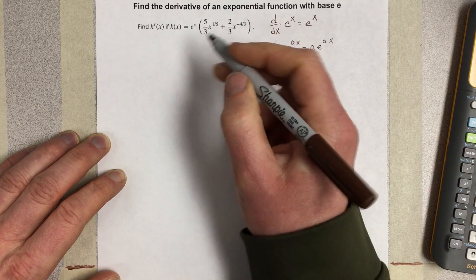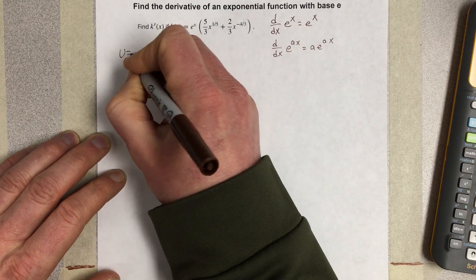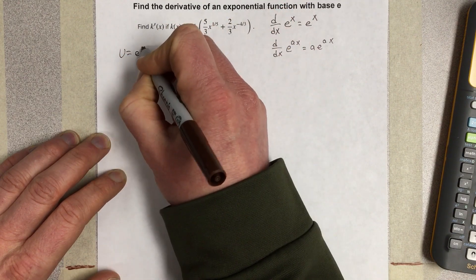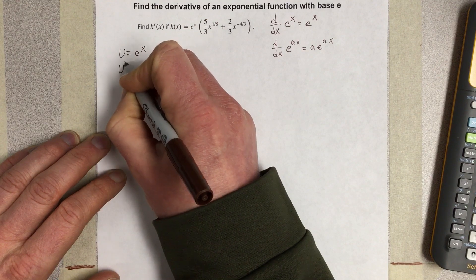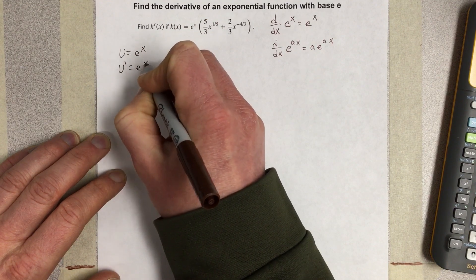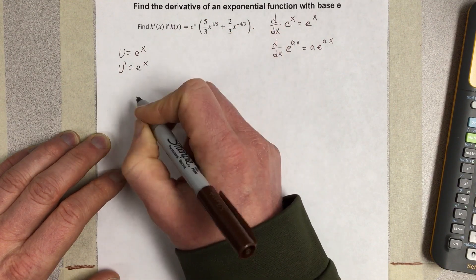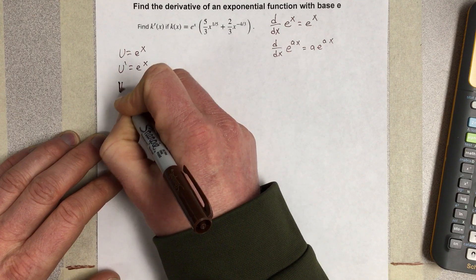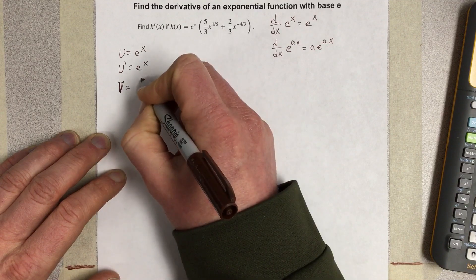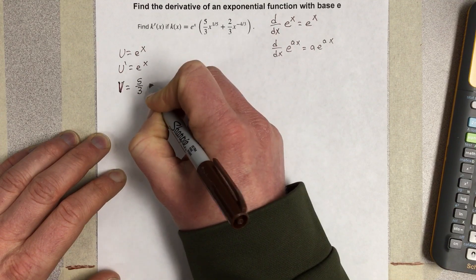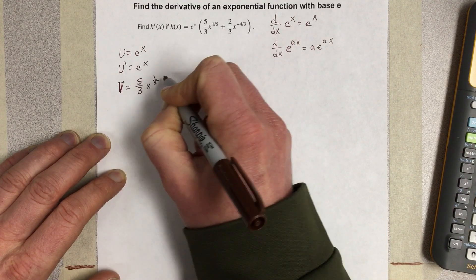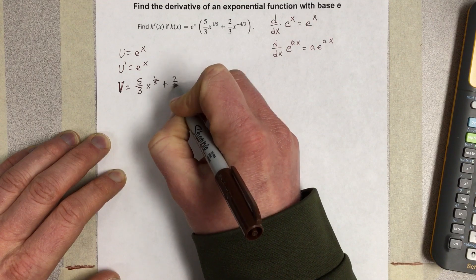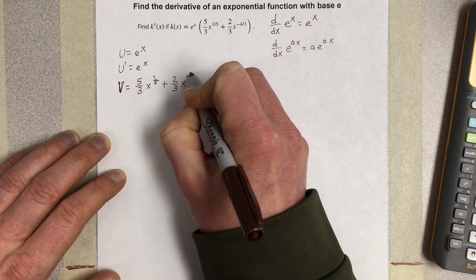Now this is going to be a product rule. So we're going to start by saying u equals e to the x. U prime then would be e to the x as well because the derivative of e to the x is itself. We can say that v would be equal to five thirds x to the one fifth plus two thirds x to the negative four thirds.